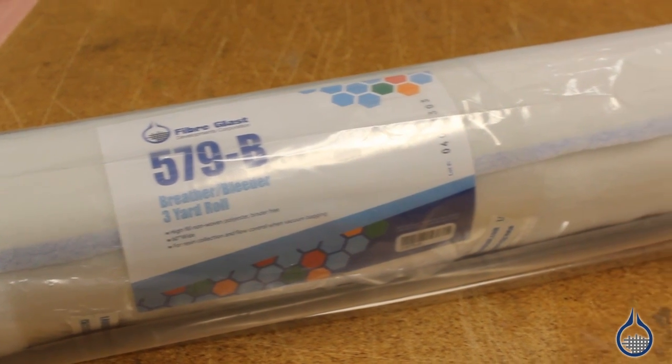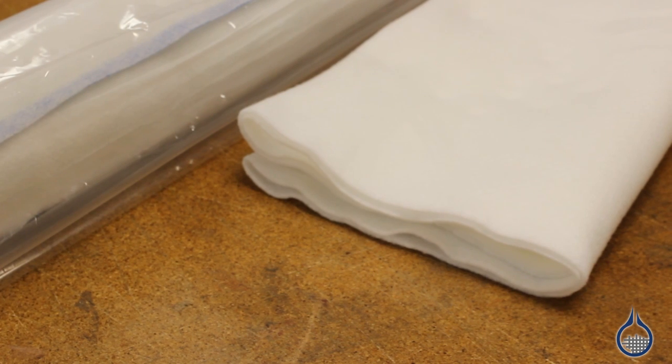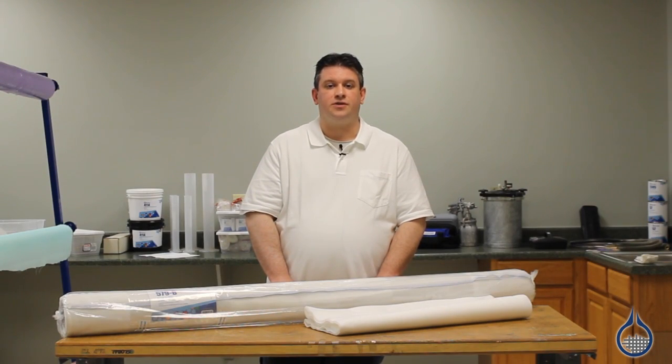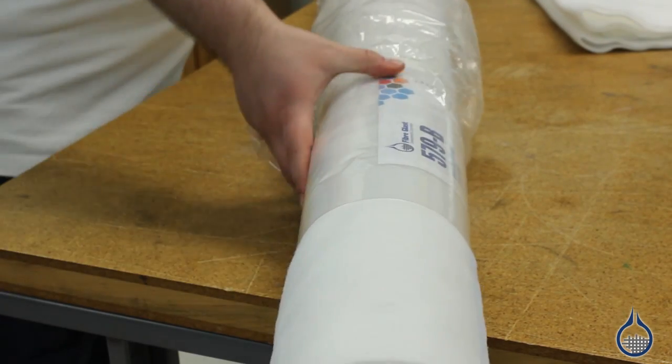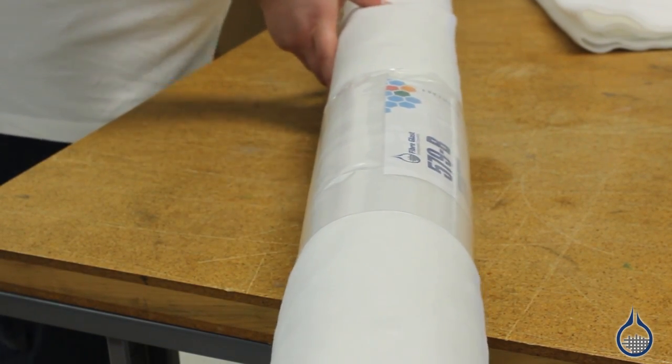As a breather, these products are used in the vacuum bagging process to evacuate all of the air in the bag while applying vacuum. A breather allows for even pressure to be applied over the entire surface of the laminate. The breather also allows for any gases produced during the cure to be evacuated from the laminate to your vacuum source.